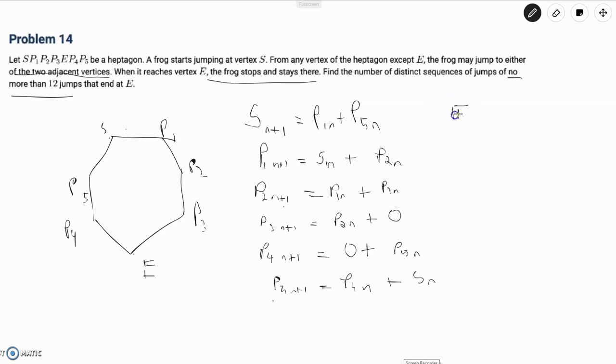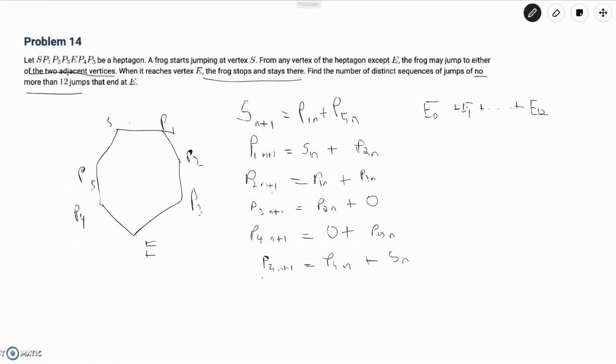The problem says distinct jumps of no more than 12 jumps. So this no more than means it could be less than 12 jumps that we have to count. We would essentially have to count E(0) + E(1) all the way up to E(12) since we want everything less than or equal to 12 jumps. With all this mapped out, let's go over and fill out our table.